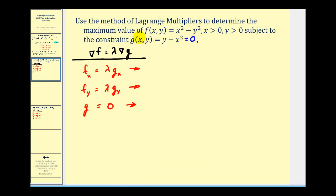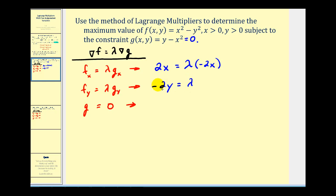Here we want to determine the maximum value of f based upon the constraint g. We'll create a system of equations by setting the gradient of f equal to lambda times the gradient of g, resulting in two equations plus the constraint. The partial derivative of f with respect to x is 2x, equal to lambda times the partial derivative of g with respect to x, which gives us negative 2x. For the second equation, the partial of f with respect to y is negative 2y, equal to lambda times the partial of g with respect to y, which is 1. The third equation is our constraint: y minus x squared equals zero.